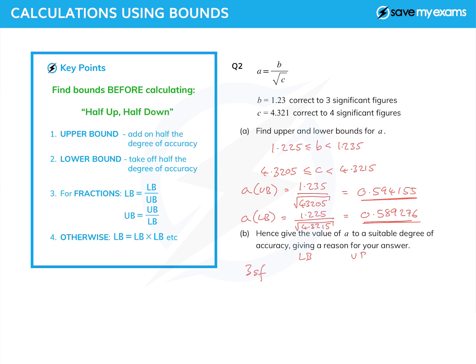The lower bound is 0.589, so three significant figures—or three decimal places. And the upper bound is 0.594, so they're still different. Now if I look at two significant figures, the lower bound is 0.59 and the upper bound is 0.59.